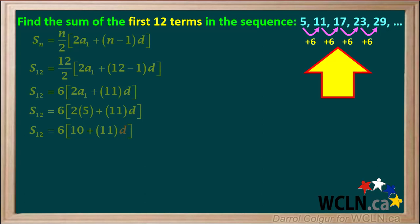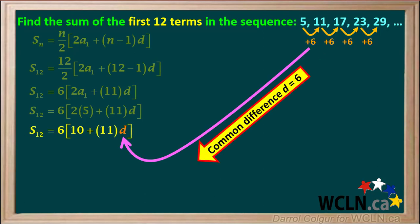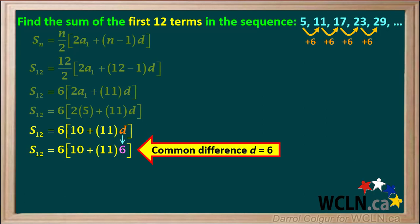Looking at the sequence on the top right, we can see that we need to add 6 to each term to get to the next term. 5 plus 6 is 11, 11 plus 6 is 17, and so on. So the common difference in this sequence, d, is equal to 6. Therefore, we can substitute 6 for d in our equation.